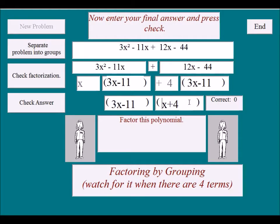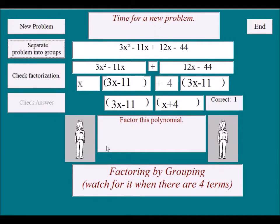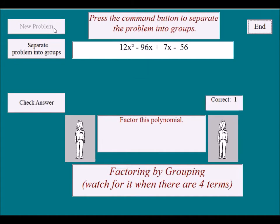You can't see it now, but my keyboard stuck there. Now I have taken 3x minus 11 out of this group and gotten an x, and 3x minus 11 out of this group and gotten a 4. Now we should check if it makes one correct. We can do a new problem one more.